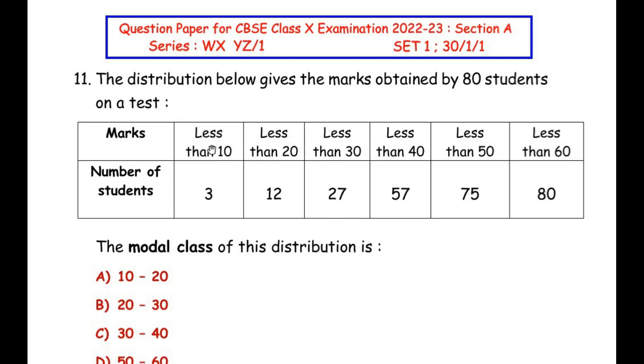So the marks are given that is less than 10, less than 20 and so on till less than 60 and number of students is given as 3, 12, 27 and so on till 80. The modal class of this distribution is.